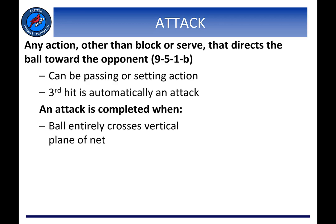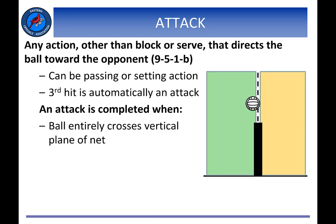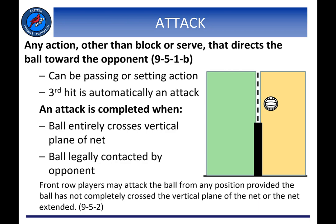An attack is considered to have been completed when one of two things occur: either the attack completely crosses the vertical plane of the net, or the attack is legally contacted by the opponent. This is an important component to the rule, as an illegal attack cannot be whistled if one of those two things has not yet occurred.